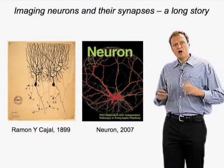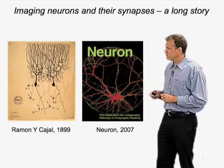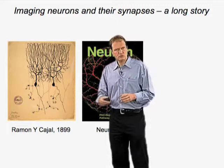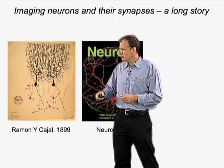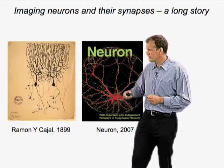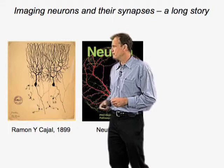Imaging has a long tradition in neurobiology. Going back to Ramon y Cajal, it's really been at the forefront of neurobiological research. Ramon y Cajal perfected the Golgi technique, which is a method to sparsely label neural tissue, to come up with the neuron doctrine — figuring out that neurons are the elemental building blocks of the brain, and that neurons have an input site, the dendrite, and an output site, the axon.